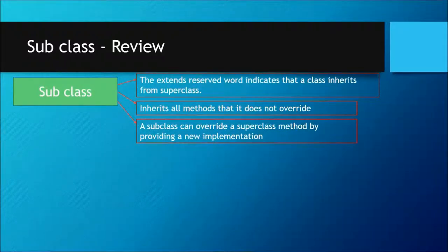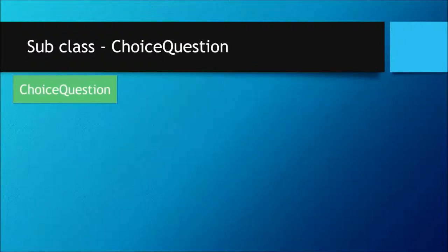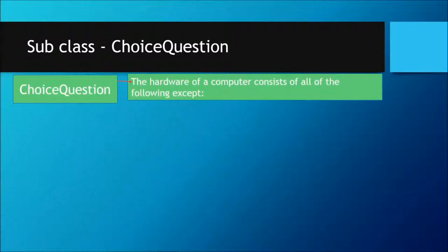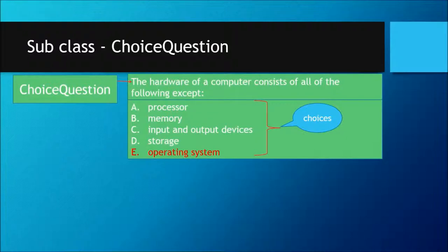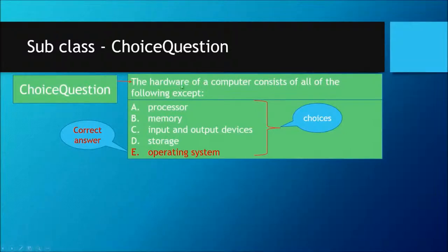A subclass can override a superclass method by providing a new implementation. Let's take a look at the ChoiceQuestion subclass. When we talk about a choice question, we first have a question — for example: 'The hardware of a computer consists of all of the following except.' This question has choices: processor, memory, input and output devices, storage, and operating system — choices A, B, C, D. One of them is the correct answer. So a choice question has three parts: the question itself, the choices, and the correct answer.